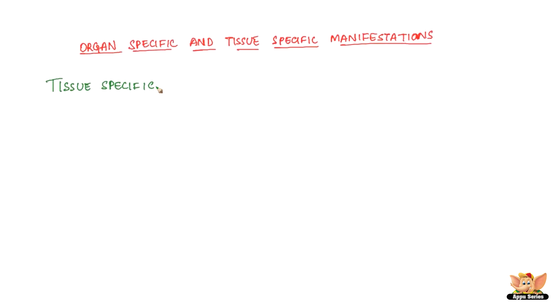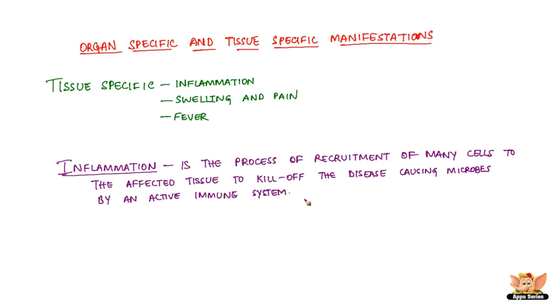In addition to organ-specific effects, tissue-specific effects include inflammation, swelling, pain, and fever. Inflammation is the process of recruitment of many cells to the affected tissue to kill off disease-causing microbes, driven by an active immune system in response to an infection.